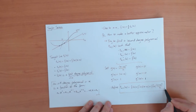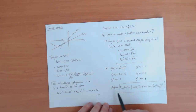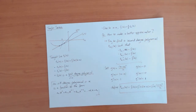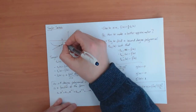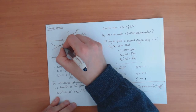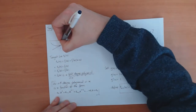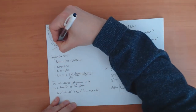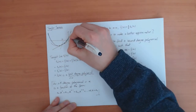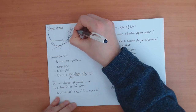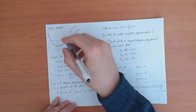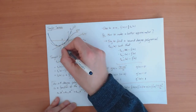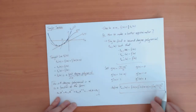So that's our solution. T_a^2(x) is a second-degree polynomial because it contains x², and it matches the value, the first derivative, and the second derivative of f at the point a. If I draw it on the graph, you get a quadratic curve. This T_a^2(x) is a good approximation to the function f over a wider range of x than the tangent line alone — so adding the second-order term does improve the approximation.